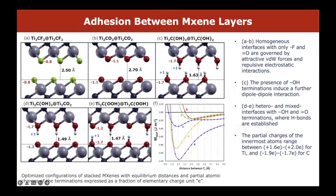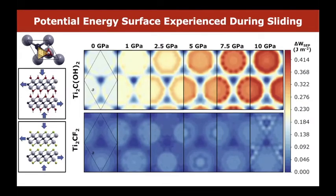The partial charges on titanium are positive, ranging from 1.6 to 2 electrons, and those on the inner carbon atoms are negative, ranging from minus 0.9 to minus 0.7 electrons. These different kinds of interactions make clear why the presence of hydroxyl groups increases interlayer adhesion. We then calculated how the adhesion energy changes as a function of the relative lateral position of the two layers by displacing one layer with respect to the other.